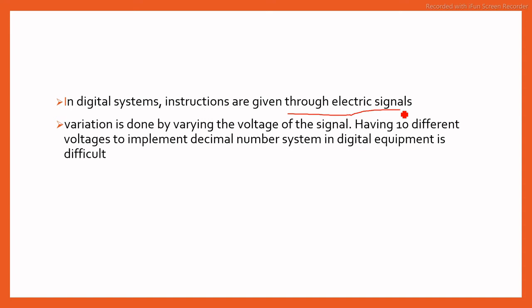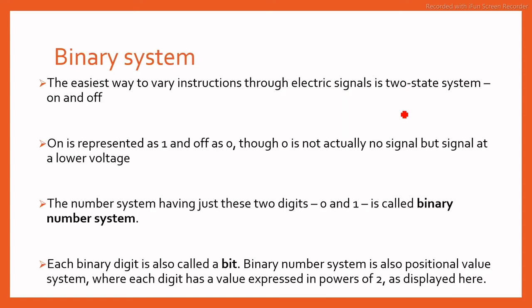If we try to represent 10 numbers with voltage, it is very difficult. So this is the drawback of decimal. The decimal number system is common and most of the time we use it in our daily life, but in computers we use binary system. The easiest way to vary instructions through electric signals is to state on and off, that means 0 or 1, the binary system.